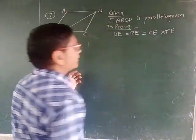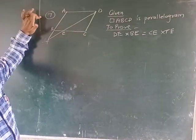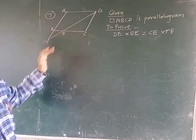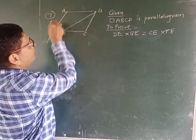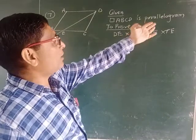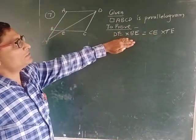Hello friends, now look at this 7th example in the practice set 1.3. Here quadrilateral ABCD is a parallelogram and we have to prove this equation.